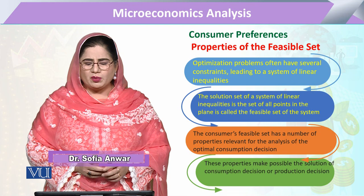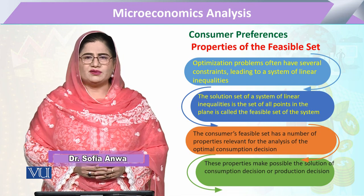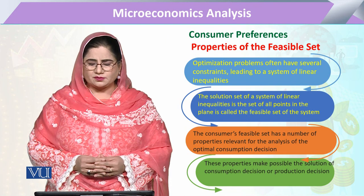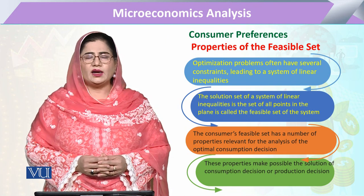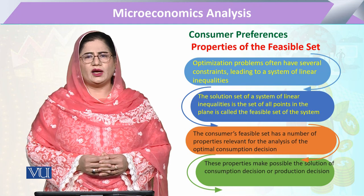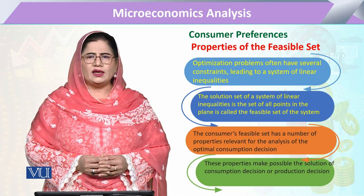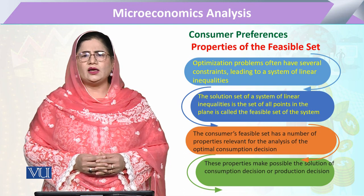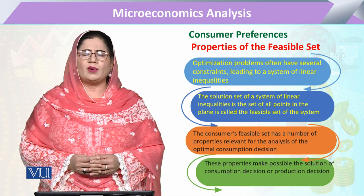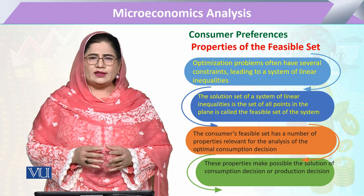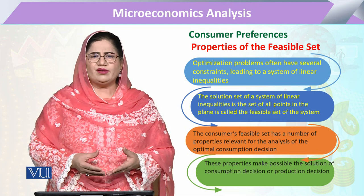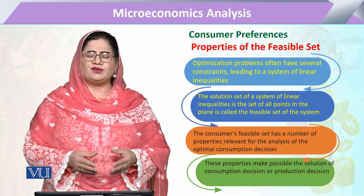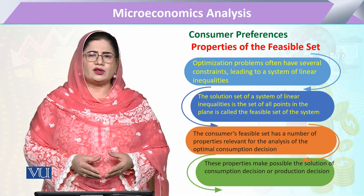The optimization problems have several constraints. Whenever there are several constraints, we have various linear inequalities, and these linear inequalities are solved by a certain available set. That solution set available to the consumer is called the feasible set.